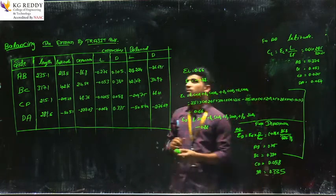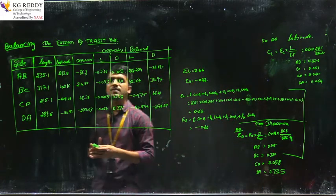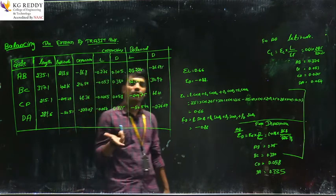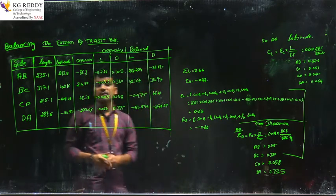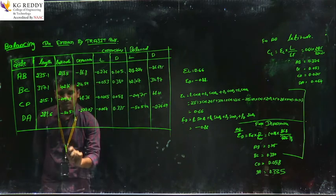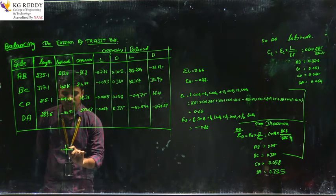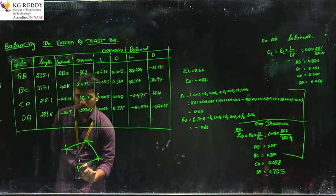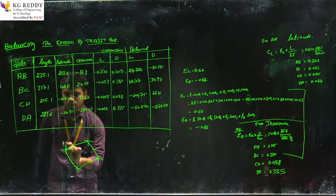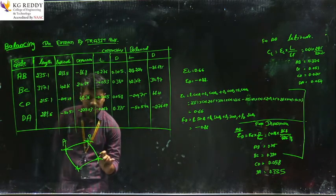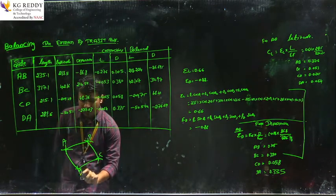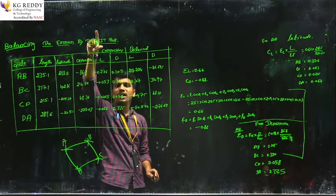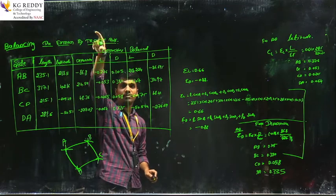In the transit rule, it is defined as the rule which is used to find out the error in any lines of the traverse. Any lines of the traverse means, for example, points A, B, C and D. The only difference between the Bowditch rule and transit rule is only the parameter of the closed traverse.